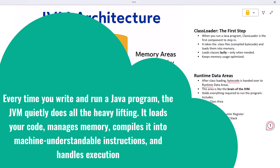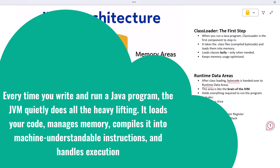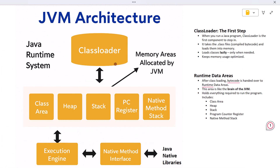It loads your code, manages memory, compiles it into machine-understandable instructions, and handles execution. But how exactly does it do all that? To understand that, we need to look inside the JVM and explore its internal components. Let's start from the top with the class loader. When you run a Java program, the class loader is the very first component to step in — it takes the .class files, the compiled bytecode, and loads them into memory. The class loader loads classes lazily, meaning only when they're needed, which helps with efficiency and keeps memory usage optimized.